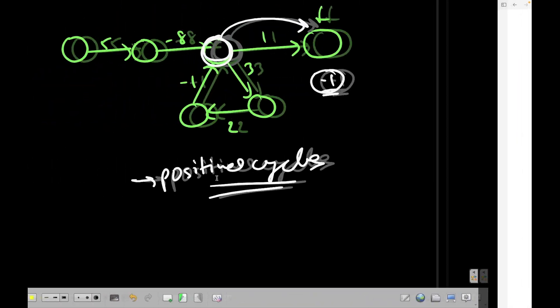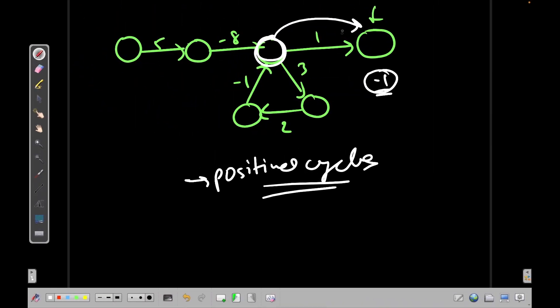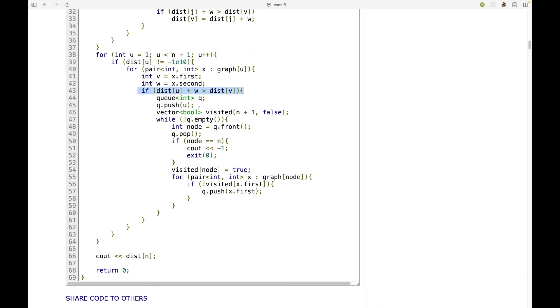And now I just need to check if I can get from this node to the n node. So this is the simple BFS code. If I can go from here to the n node, then I can simply say that the answer is minus one. If I can't, then I will just simply continue and try some other nodes.